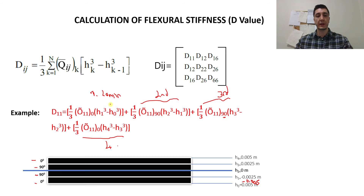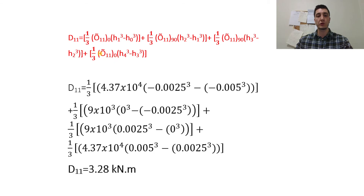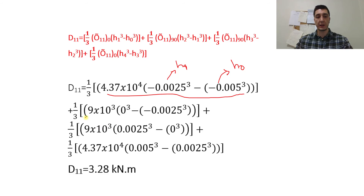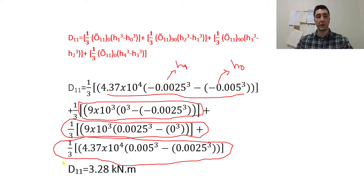Before we go to the example, I need to make it clear: for H1 we use this value and for H0 we use this value as a negative. For D-1-1 we use this formulation, where H1 and H0 are in the minus sign. That belongs to the first layer, that to the second, that to the third, and that to the fourth layer. We sum all of them up and we get D-1-1 as 3.28 kilonewton times meter.